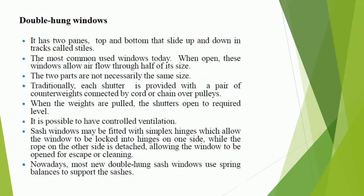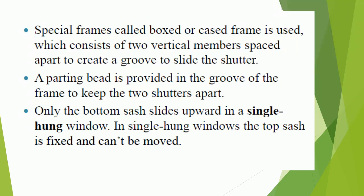Sash windows may be fitted with simplex hinges which allow the window to be locked on one side while the rope on the other side is detached, allowing the window to be opened for escape or cleaning. Nowadays, most new double hung sash windows use spring balances to support the sashes. Special frames called boxed or cased frames are used, consisting of two vertical members spaced apart to create a groove to slide the shutter. A parting bead is provided in the groove of the frame to keep the two shutters apart.